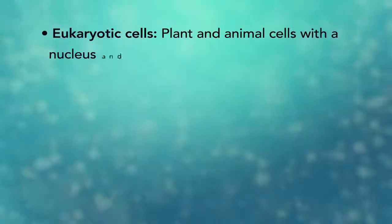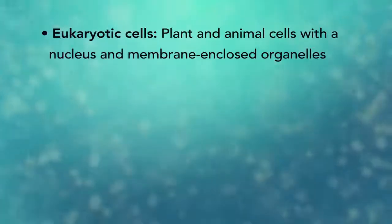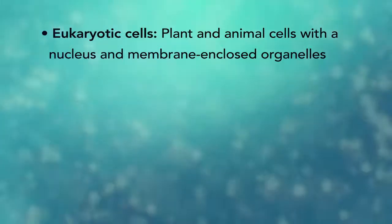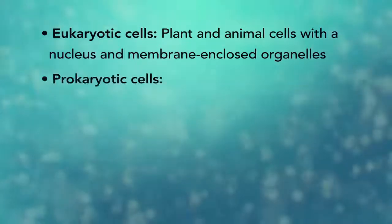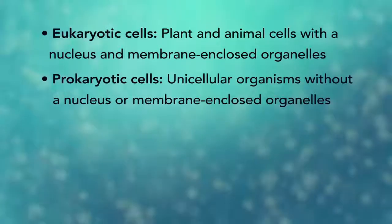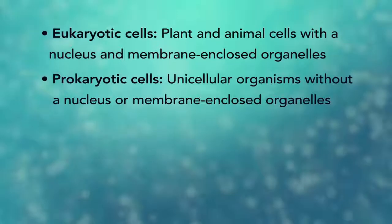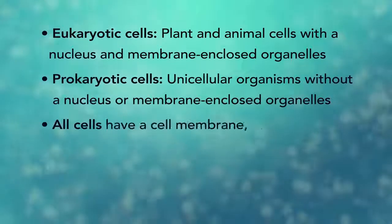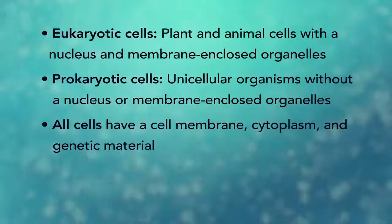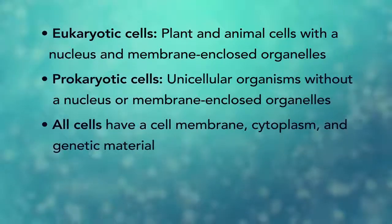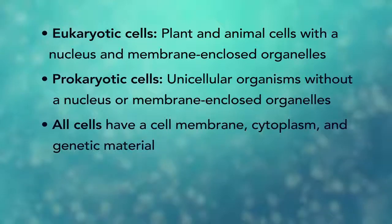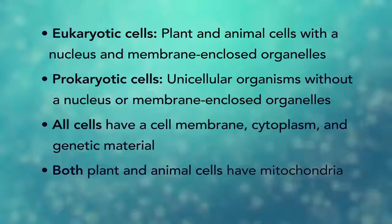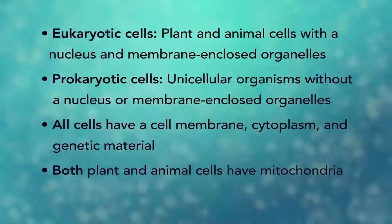In summary, eukaryotic cells are plant and animal cells with a nucleus and membrane-enclosed organelles, while prokaryotic cells are unicellular organisms without these things. All cells have a cell membrane, cytoplasm, and genetic material. And even though only plant cells have chloroplasts, both plant and animal cells have mitochondria.